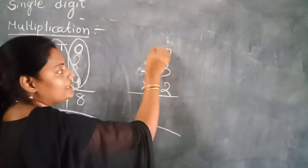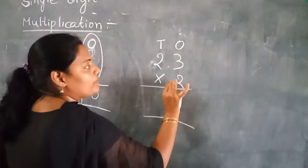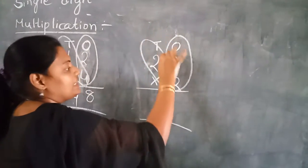What's the place value? 1's, 10's. So 2 we have to multiply first with 1's place, next with 10's place.